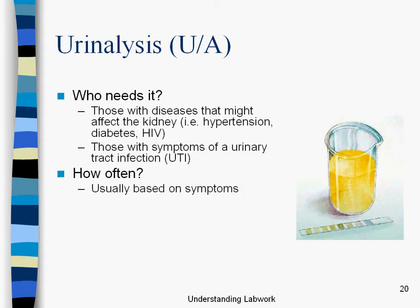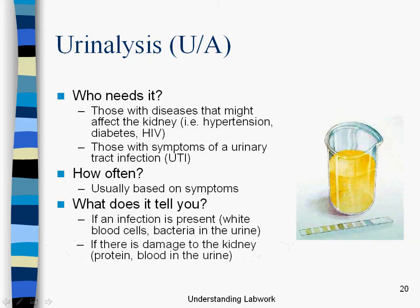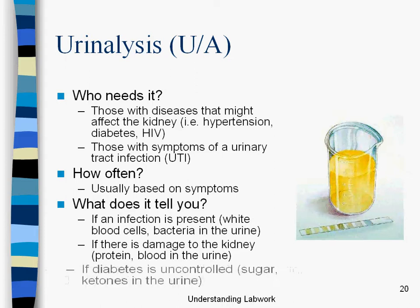How often is it done? It's usually based on symptoms. And what does it tell you? If an infection is present — that is, if the urine contains white blood cells or bacteria — it can often tell us if there's damage to the kidneys, and we would see that through protein or blood in the urine. And if diabetes is uncontrolled, we would see sugar and ketones in the urine.